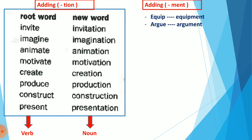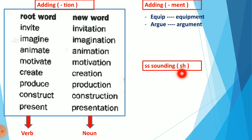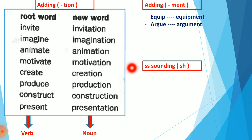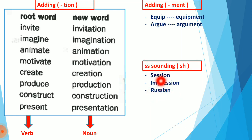The second way to make nouns is adding -ment to verbs. Like 'equip,' meaning to prepare, becomes 'equipment.' Another example: 'argue,' meaning to argue, becomes 'argument.' So we have two ways to form nouns: adding -tion or adding -ment. The third part of Working with Words was the double-s sounding as 'sh.' The 'sh' sound can be made two ways: with 's-h' or with double-s in the middle of a word. Double-s only sounds like 'sh' when it is in the middle of the word — like 'session,' 'impression,' and 'direction.'